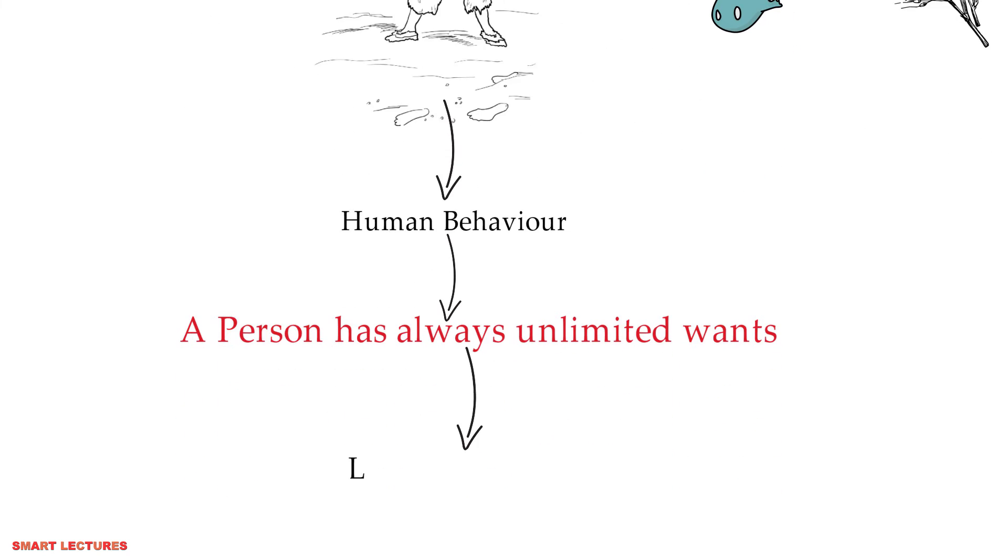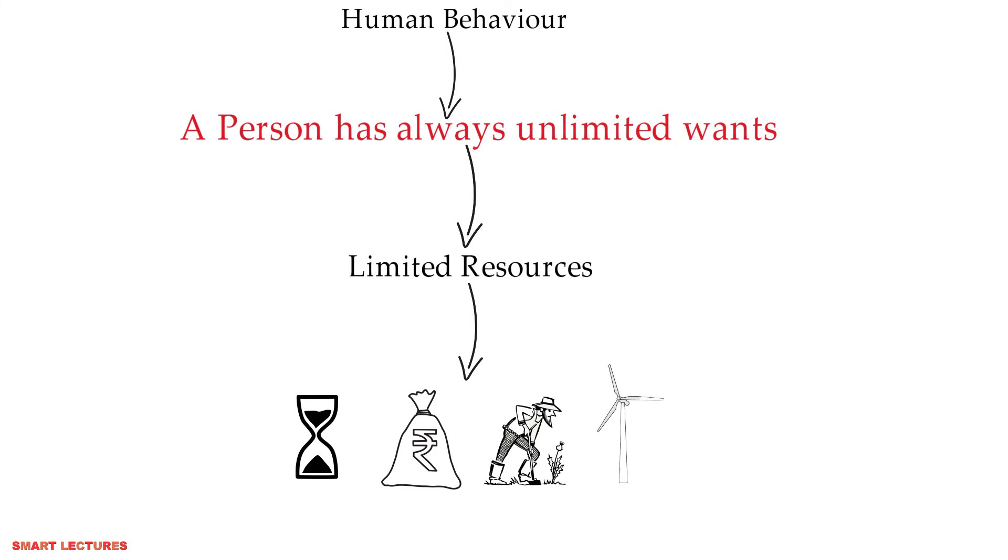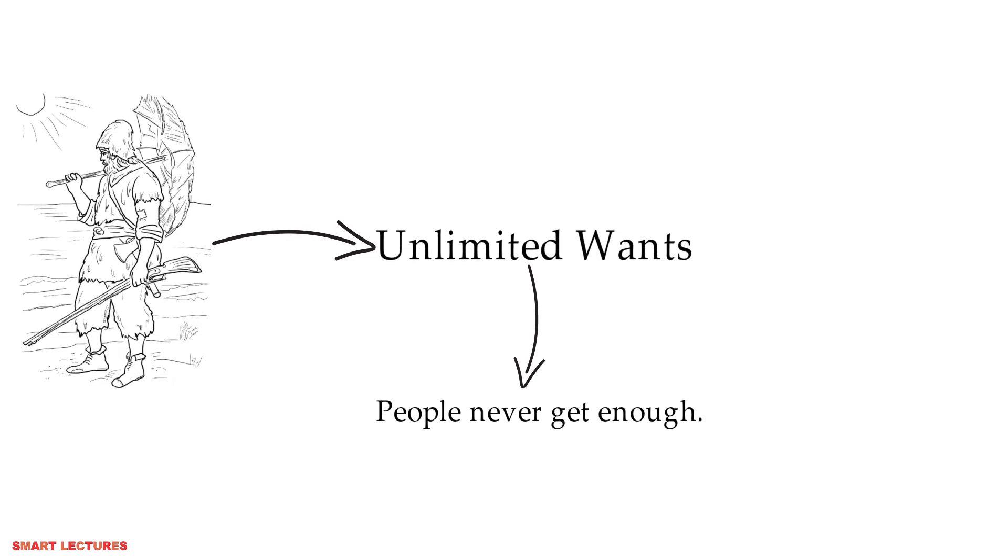So human behavior tells us that the person always has unlimited wants. But unfortunately, limited resources. When I say limited resources, it means time, money, skill, means, energy, etc., are the examples of resources in this story.